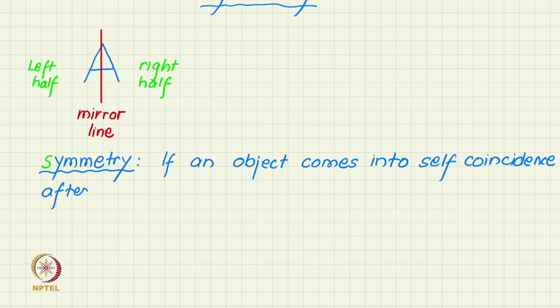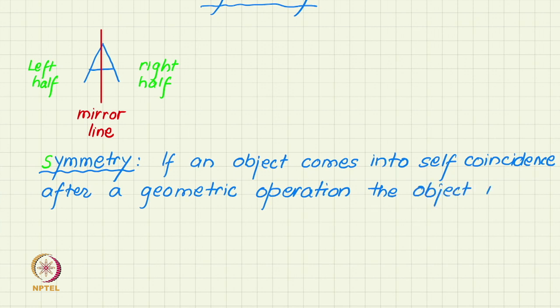In the case of letter A, the geometric operation was reflection in a line. So if an object comes into self-coincidence after a geometric operation, the object is said to be symmetric.